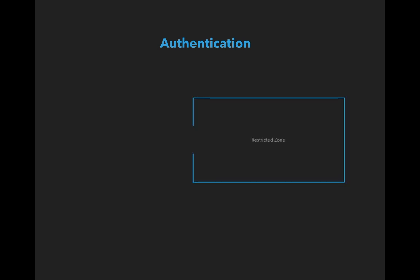How does authentication look in practice? Suppose we have a restricted resource with someone guarding it. You as a user would like to access the restricted area, and to do that you have to show the guard that you are authorized to enter. You authenticate yourself by providing an ID before they let you into the restricted zone.